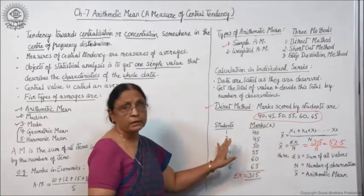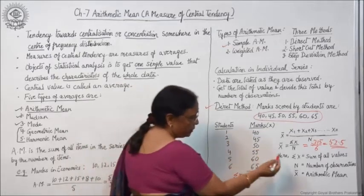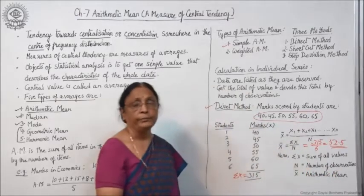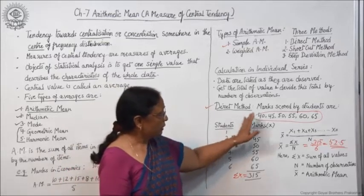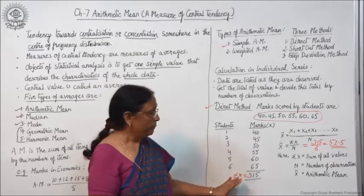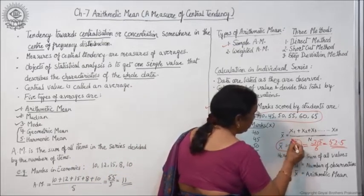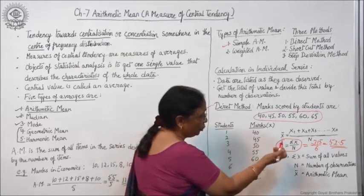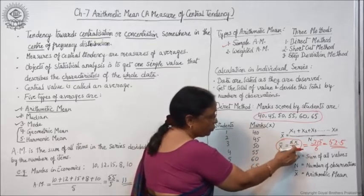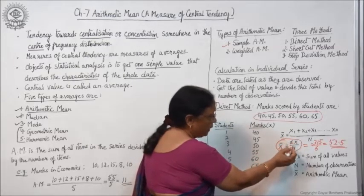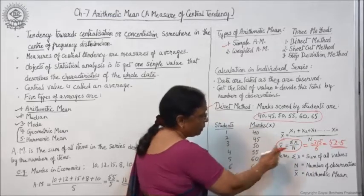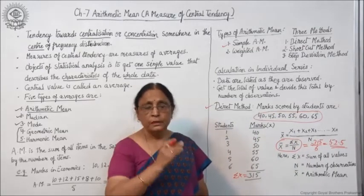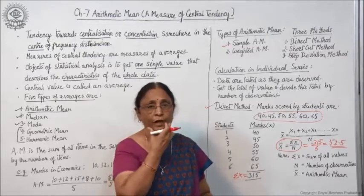In the direct method, σx is the sum of all values and n is the number of observations. You must learn the formula for the direct method. When you know the formula, you make the work columns — you immediately know what values you need for the two symbols σx and n. Accordingly, you do the calculation, place the values, and get the mean.